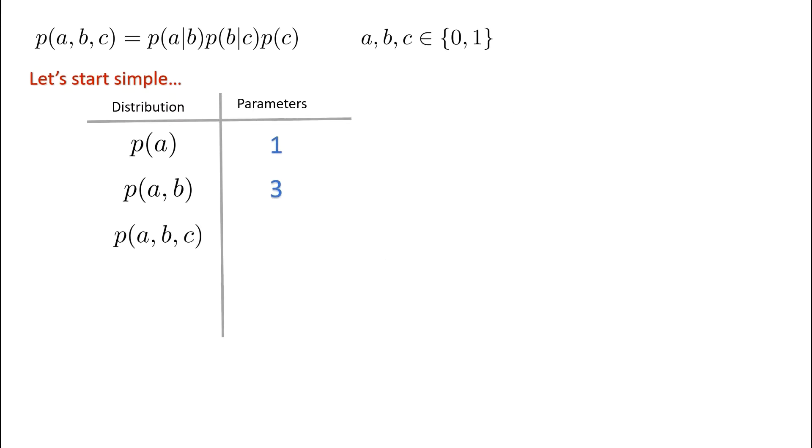Now, by a method extrapolation, it's pretty obvious that the number of parameters we require for the joint probability of A, B and C will be 2 cubed minus 1, which is just 7.